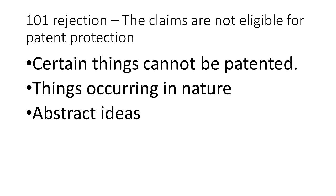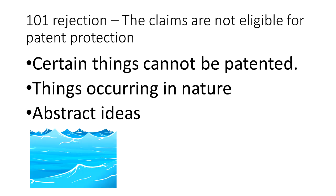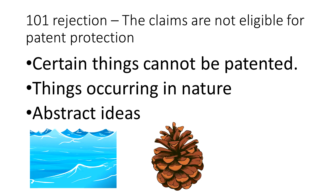A 101 rejection is for things that can't be patented — some things are not eligible for patent protection. Examples include things occurring in nature, such as seawater, naturally occurring pine cones, and basic laws of nature or fundamental math concepts like the area of a circle. For mechanical patent applications, 101 rejections are not very common.